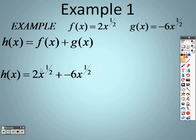Well, this is the variable x to the half and x to the half. So if I have 2x's to the half and negative 6x's to the half, I have negative 4x's to the half.